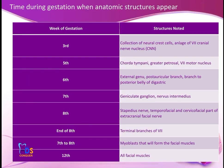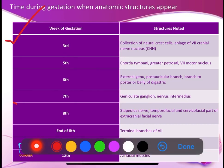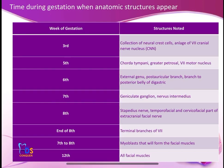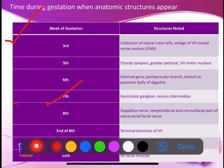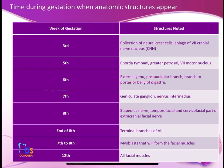Next is the timeline during gestation when anatomical structures appear with the 7th cranial nerve. Write the exact week of gestation and how the structures are formed. Especially highlight the seventh week of gestation with the geniculate ganglion, which is the ganglion for the seventh cranial nerve. Also highlight the twelfth week of gestation when the facial muscles are formed. Both of these are very important; the others you can give briefly.